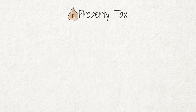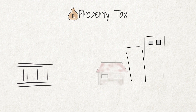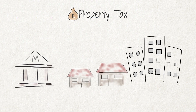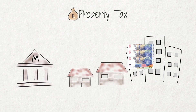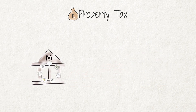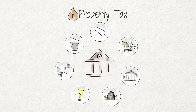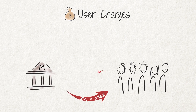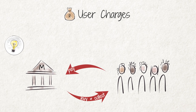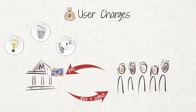Property Tax: Municipalities, other than district municipalities, also impose taxes on properties such as houses and businesses based on their values. Property taxes allow municipalities to subsidize the costs of services. User Charges: Municipalities levy and collect fees for the usage of services such as electricity, refuse collection and water and sanitation services.